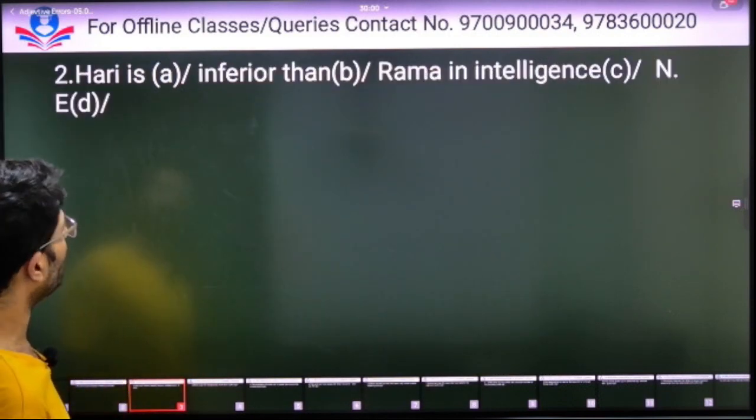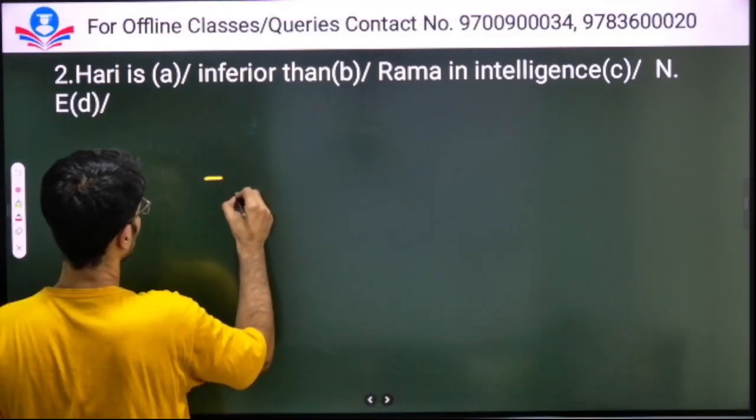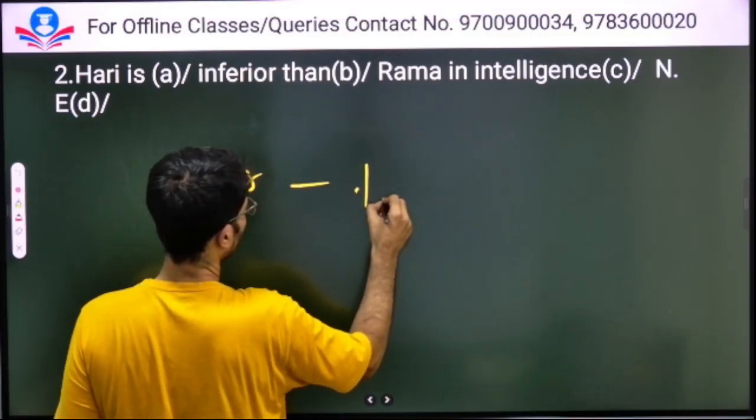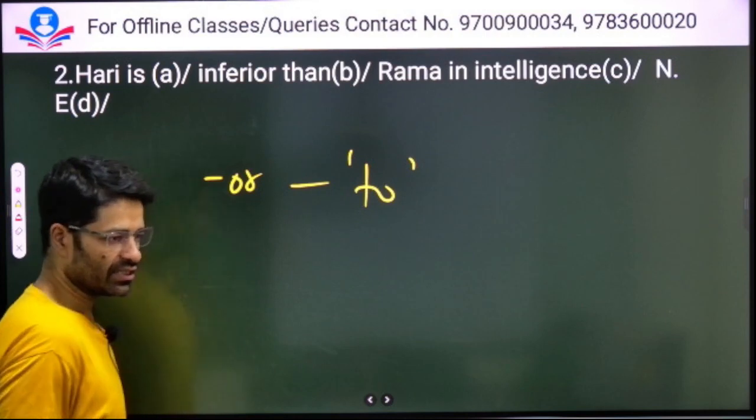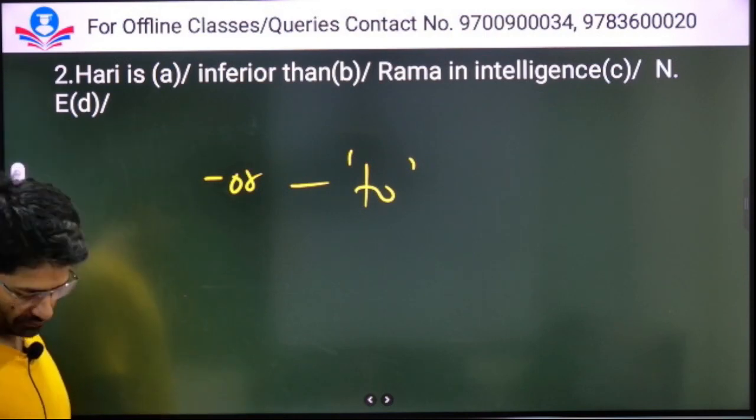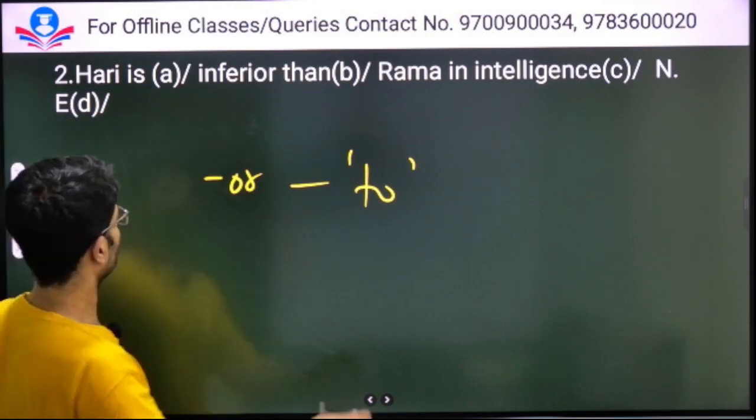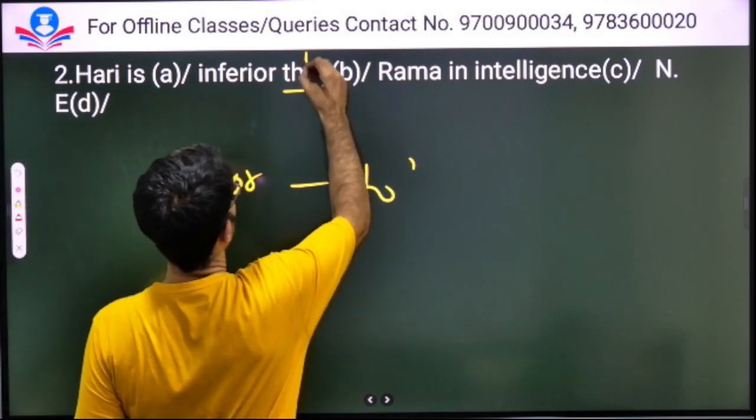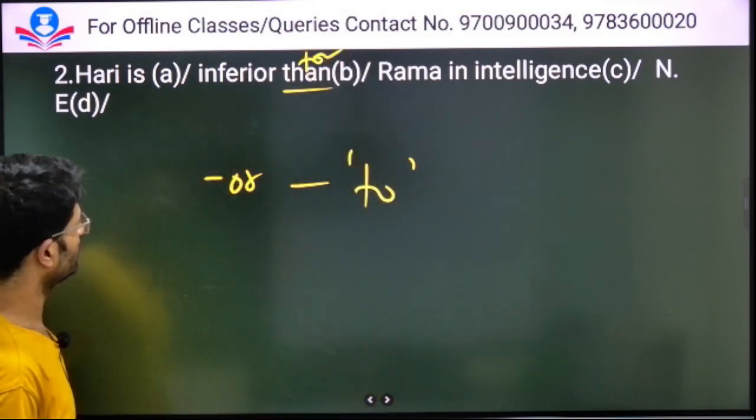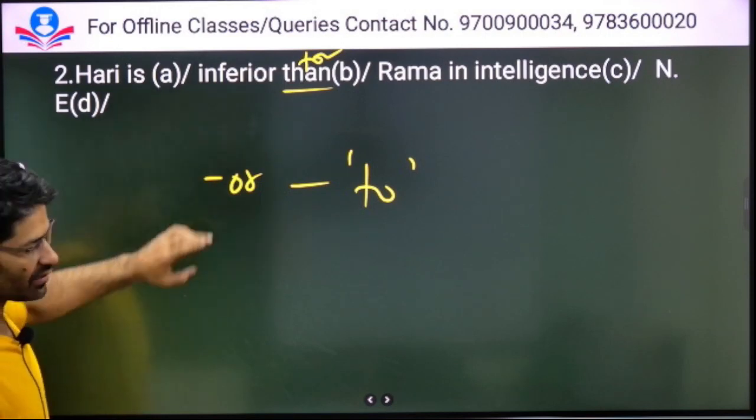Harry is inferior than Rama in intelligence. I have already told you, the adjectives of comparison, we have two prepositions: to. Inferior, senior, junior, prior, posterior - these all take 'to'. So here, 'to' will come instead of 'than'. Inferior takes 'to', not 'than'.